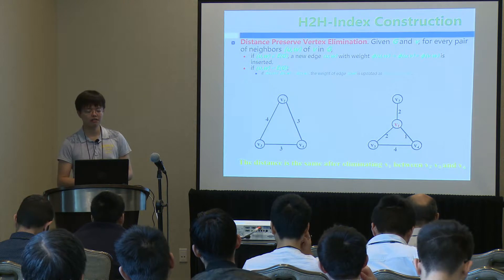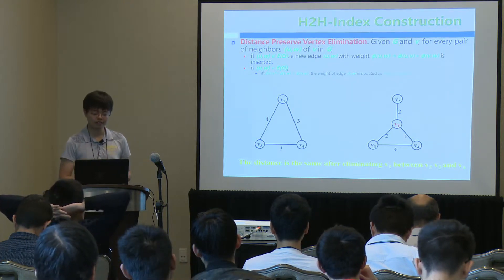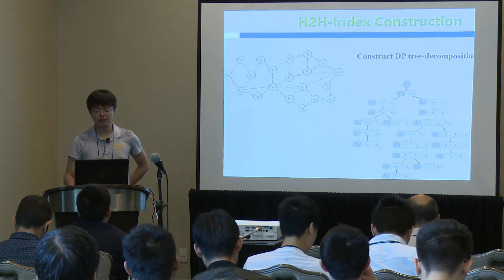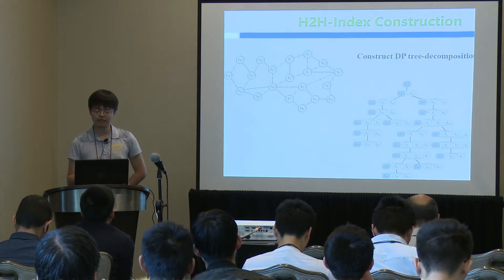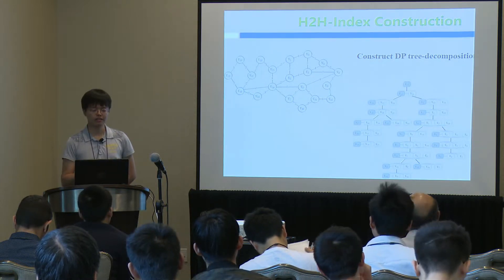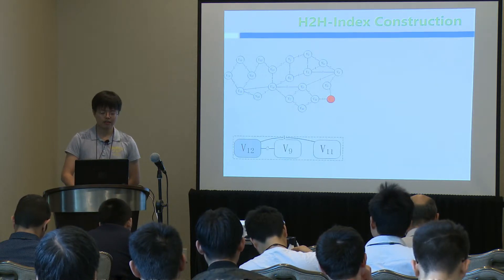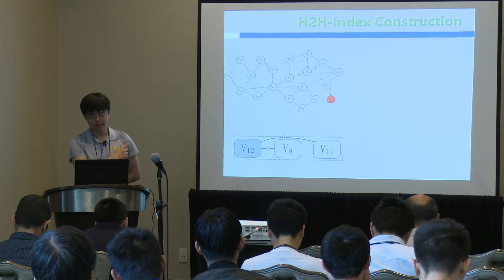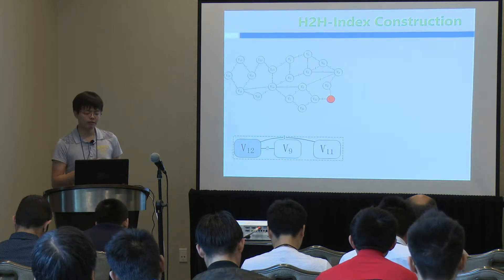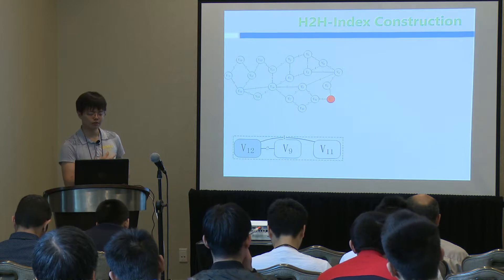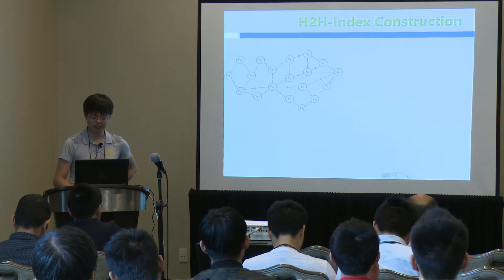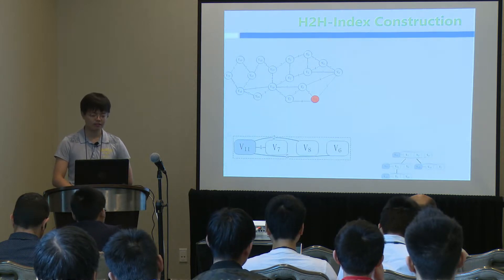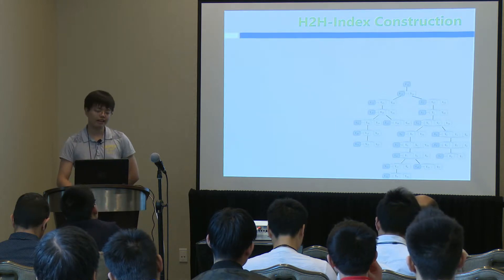After this operation, the remaining graph has the same distances between vertices V2, V3, and V4 as the original. To construct the distance-preserving tree decomposition, we eliminate vertices in a specific order defined in the tree decomposition paper. For each eliminated vertex, such as V12, we create a node containing V12 and its neighbors, save the neighbor edges, and record it in the tree decomposition. We continue with V9, V10, V11, V7, V8, until all vertices are eliminated and the tree decomposition is complete.